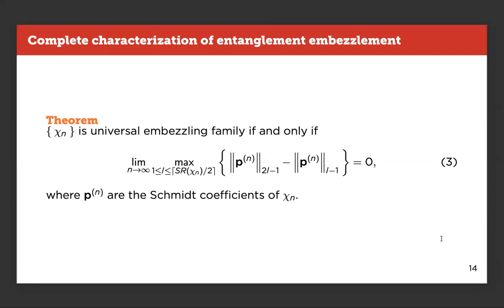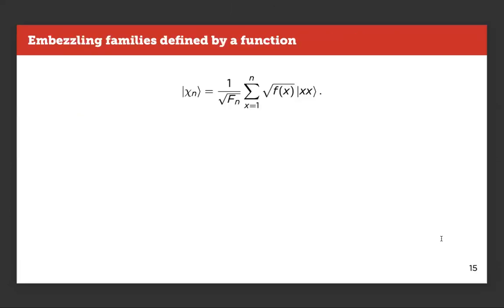I skip all the details, but the important thing of this theorem is that everything depends only on the original family. And it means that if you give me a family of states, I can, with a good amount of time, check and see where this goes. And I can answer the question if this is an embezzling family or not.